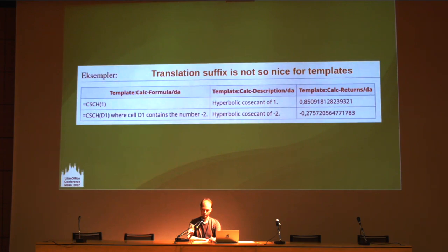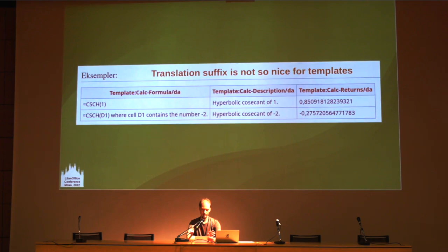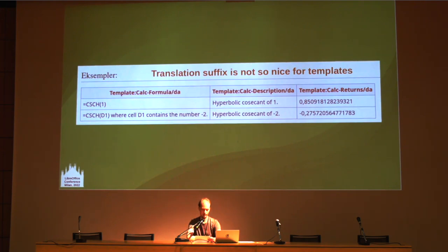When using templates, automatic references to translated versions are achieved by using a magic word suffix. This has the downside that when the template has not yet been translated, visitors will see an ugly red link. Fortunately, after the next MediaWiki upgrade, we can use the special MyLanguage prefix instead, which will show the English version in case of a missing translation. Here is an example of red template links in a Danish translation of a calc function article.